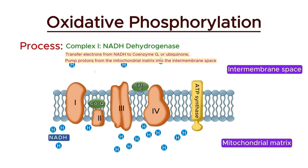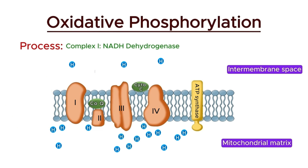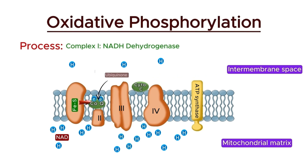First, NADH — produced during glycolysis, the citric acid cycle, and fatty acid oxidation — arrives at complex 1 and is oxidized, releasing two high-energy electrons and a proton. These two electrons are transferred to flavin mononucleotide (FMN), a prosthetic group in complex 1, reducing it to FMNH2. Next, the electrons are passed through a series of iron-sulfur clusters within complex 1, facilitating sequential transfer to ubiquinone. Finally, the electrons are transferred to ubiquinone, reducing it to ubiquinol. The energy released is used to pump four protons from the mitochondrial matrix into the intermembrane space, contributing to the proton gradient.